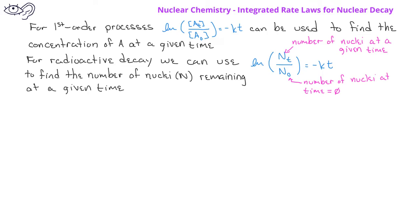This equation can be rearranged to provide a more direct means of getting to the number of nuclei remaining, so that the number of nuclei at time t is equal to the number of nuclei at the original time multiplied by the exponential function raised to negative kt.